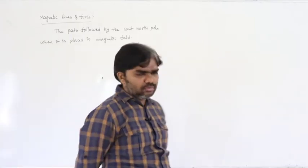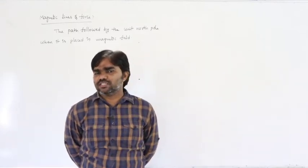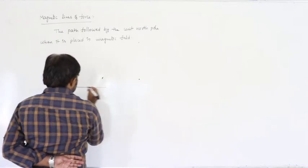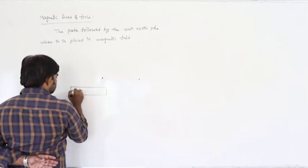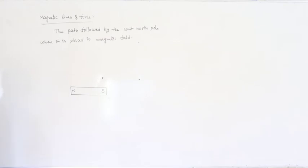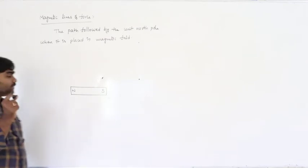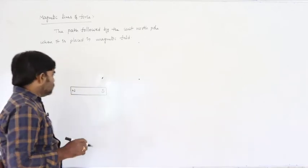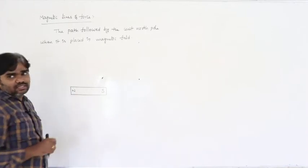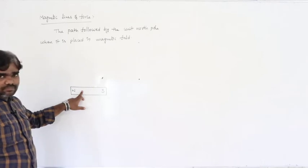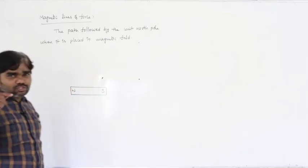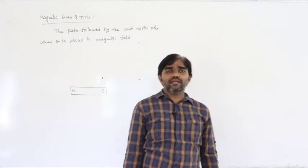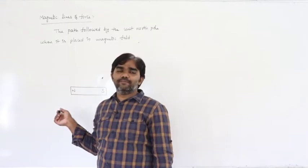But a unit north pole does not generally exist, so how can we draw magnetic lines of force? Consider this magnet with a north pole and a south pole. If we place a magnetic needle (compass needle) near the magnet, the direction shown by the needle traces out the magnetic lines of force. We have this experiment in practicals, where you can draw those lines.